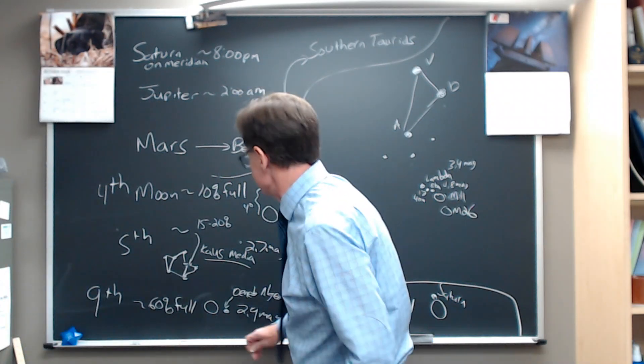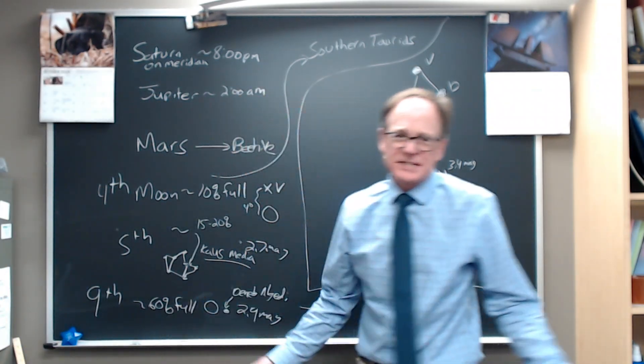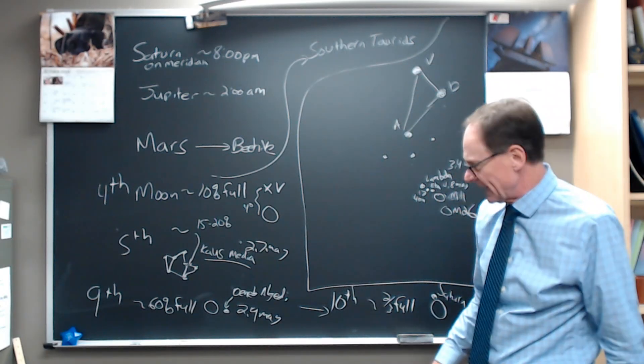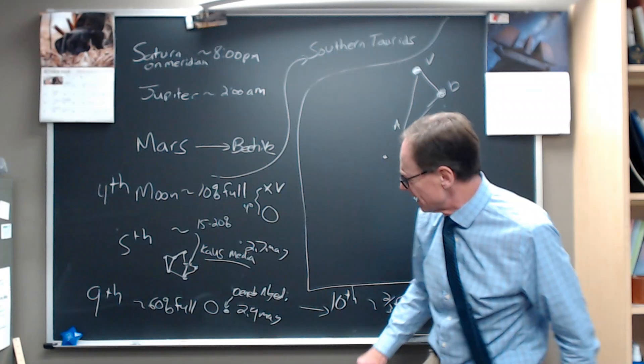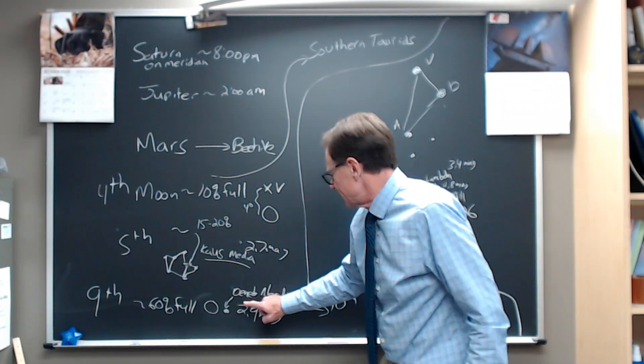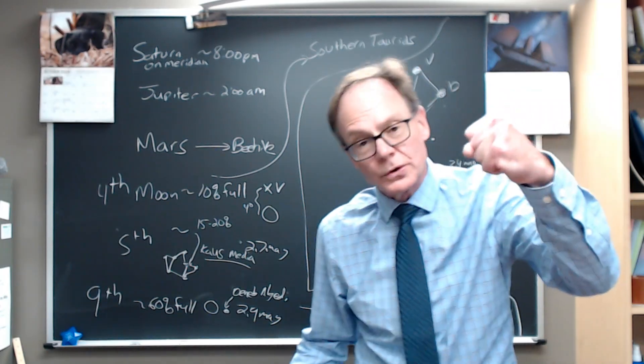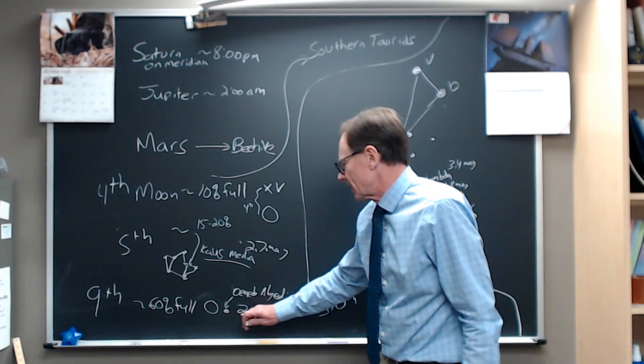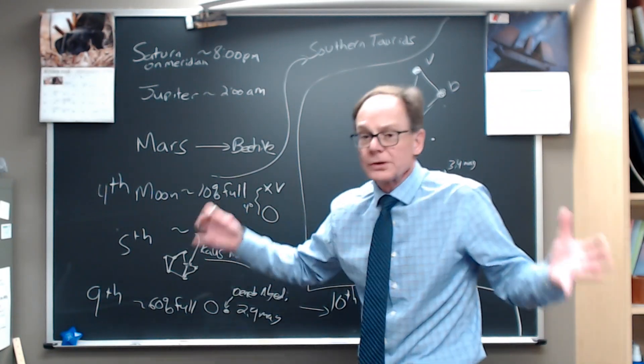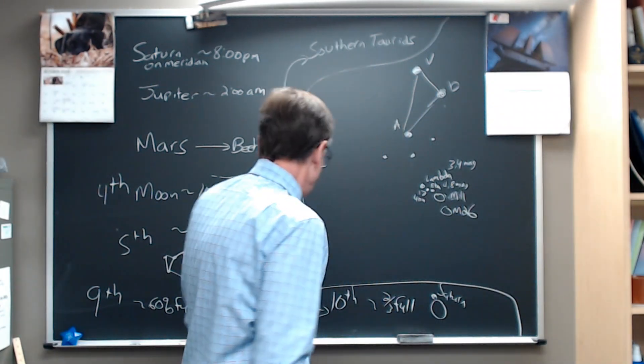Now, jump ahead four nights to the 9th, and the moon's already 60% full. It's approaching two-thirds full, and it'll be just over two-thirds full the next night. On the evening of the 9th, the moon sits a few degrees away from Deneb-Algadi, a third-magnitude star. The tail of the goat is what that is. We've talked about it quite a bit because it's in the plane of the solar system, so planetary objects, solar system objects, pass by there all the time.